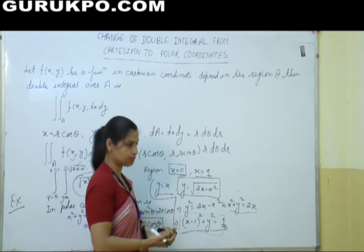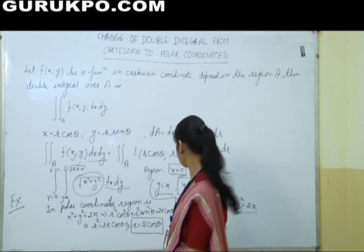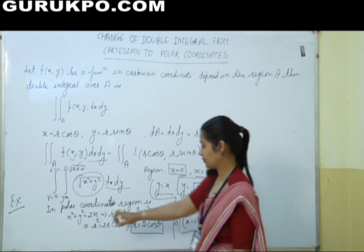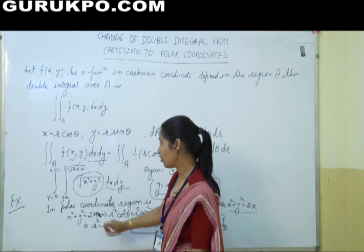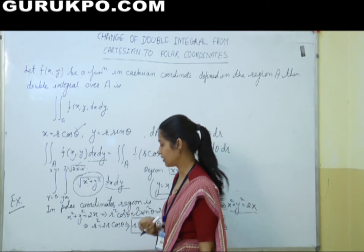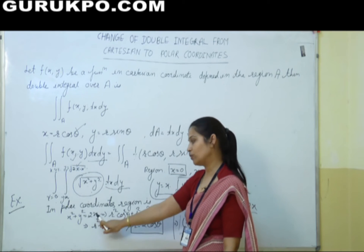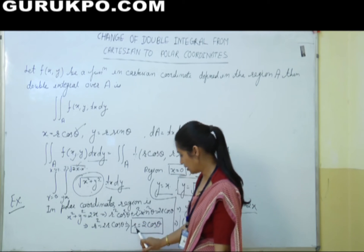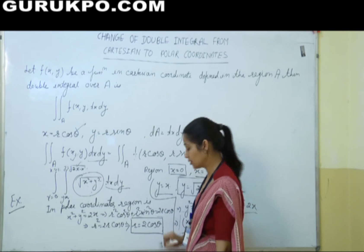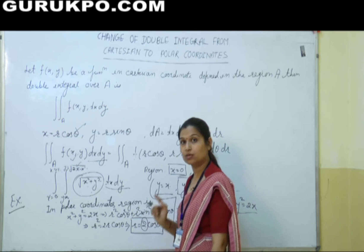This is your region in Cartesian form. The region will remain the same. Now we convert this region into polar form. The circle is x² + y² = 2x. In polar coordinates, x = r cosθ and y = r sinθ, so substituting: r² = 2r cosθ, which gives r = 2 cosθ. This is the equation of a circle with diameter 2, passing through the origin.